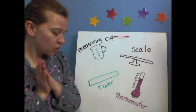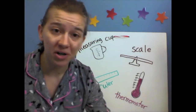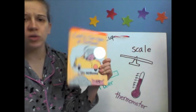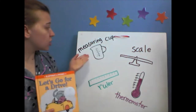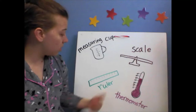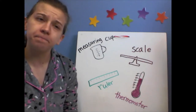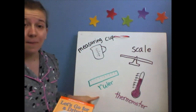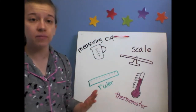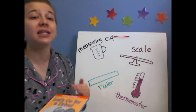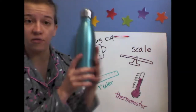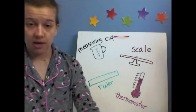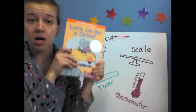How about which measuring tool would you use to find out the length of a book? Here's our book that we read last week. What measuring tool would you use? Would you use a measuring cup, a scale, a ruler, or a thermometer? A ruler, right? Rulers measure length — they show inches and centimeters and they measure the length of something. So for measuring the length of a book, a ruler.